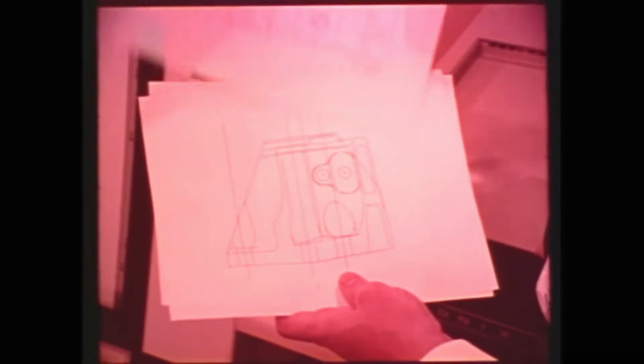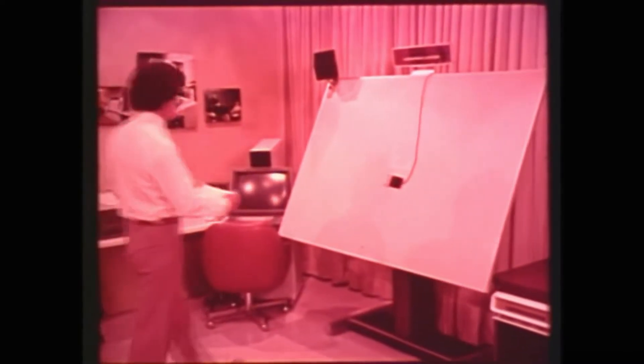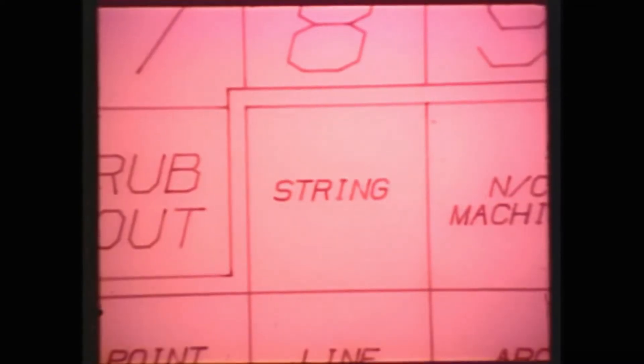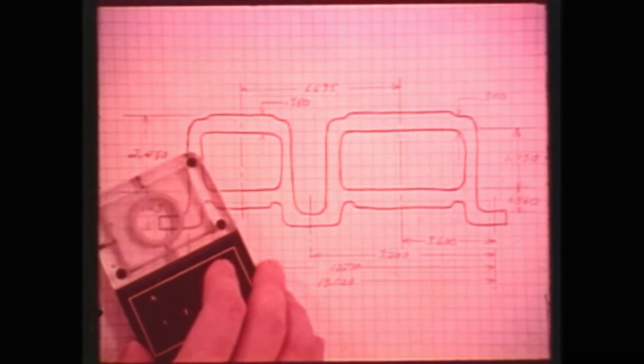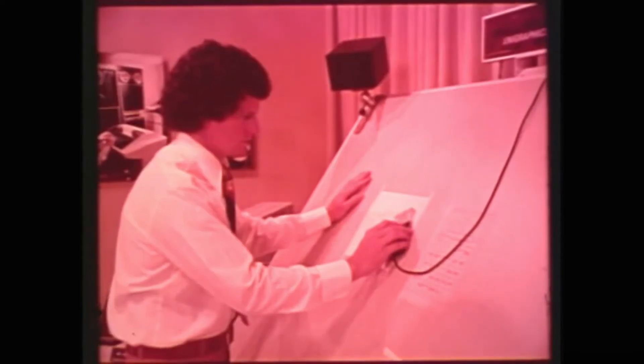There is another way this same part information could have been input to the system. It is accomplished by using an intelligent digitizer, which, when added to the UniGraphics system, extends its range and capabilities even further. A function is selected on the keypad — for example, string — then the puck-style cursor is moved over the line portions of the drawing. The drawing is recorded on the display screen as before. In turn, other functions are selected which will complete the drawing. The digitizer comes with its own message monitor for ease of operation.